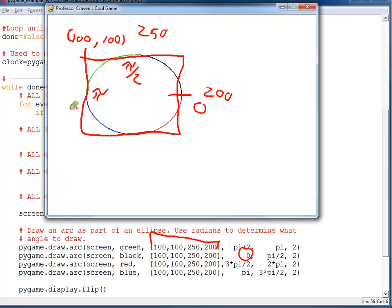Next up is the blue which goes from pi to 3 times pi over 2. So we have 3 pi over 2. And the last one is the red arc which goes from 3 pi over 2 to 2 pi.